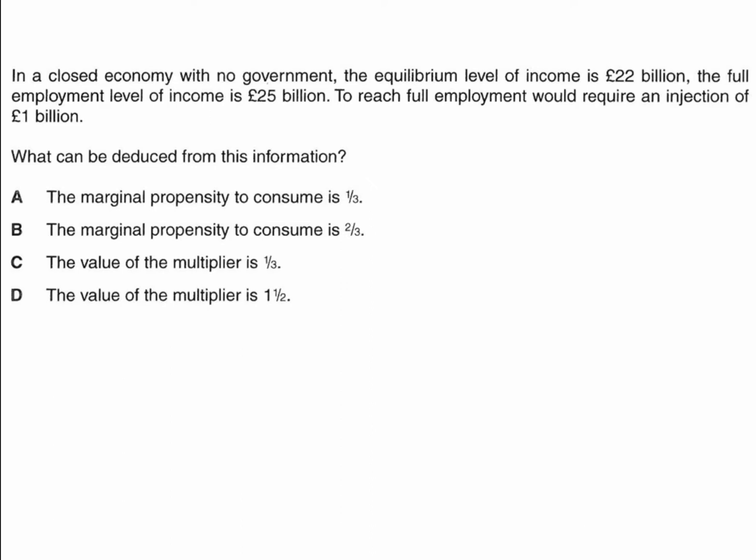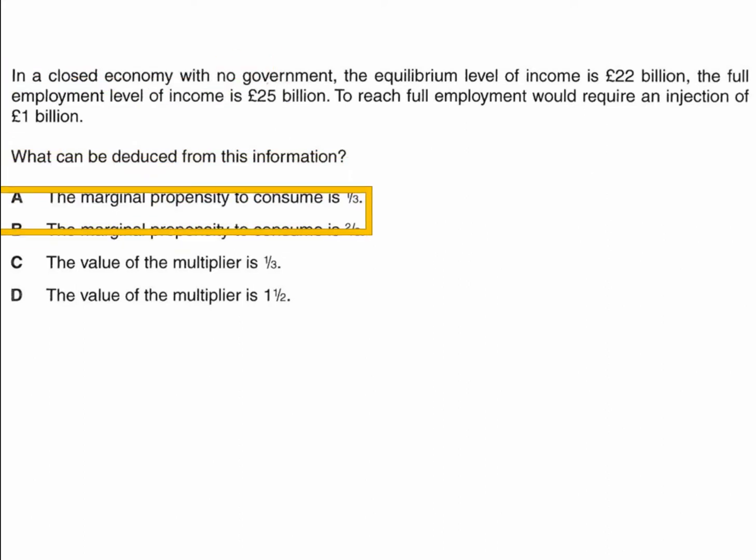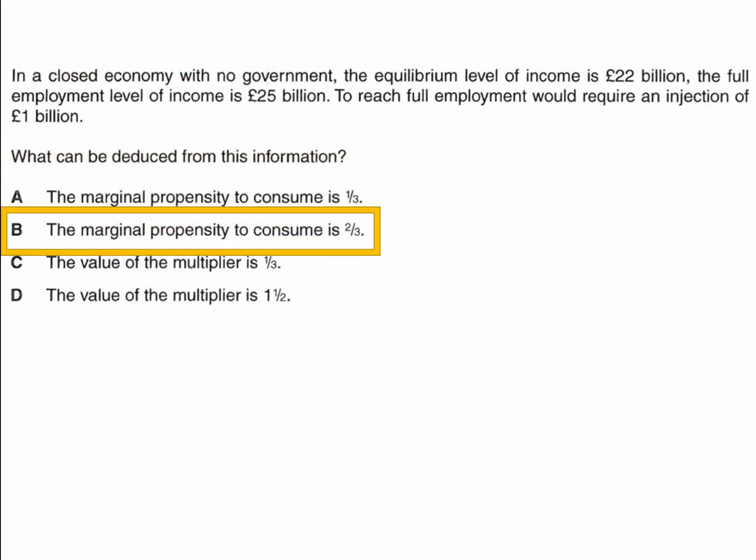Okay, how did you get on with this question? The right answer is B — the marginal propensity to consume is two-thirds.